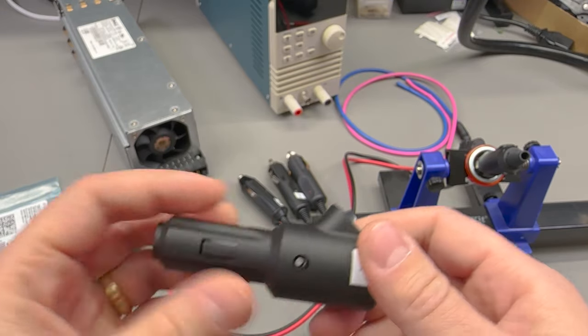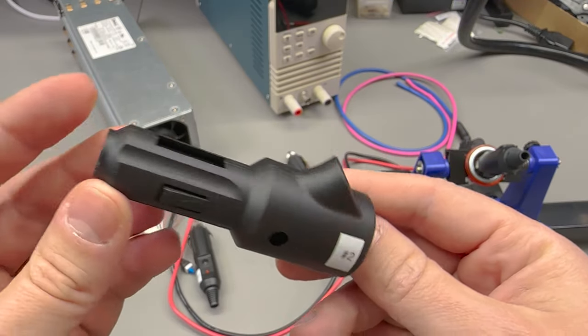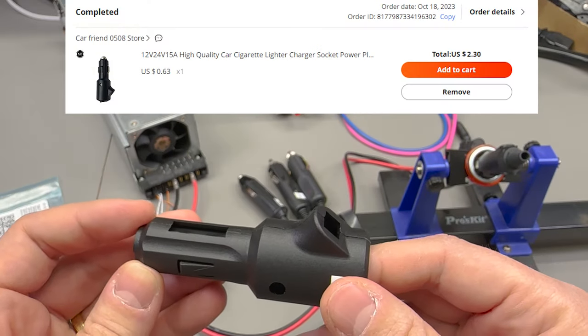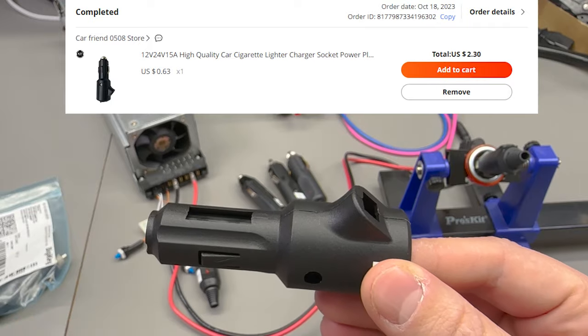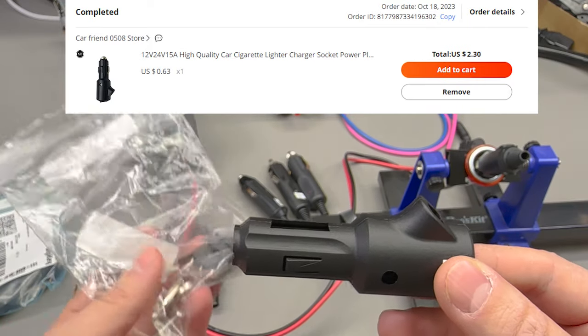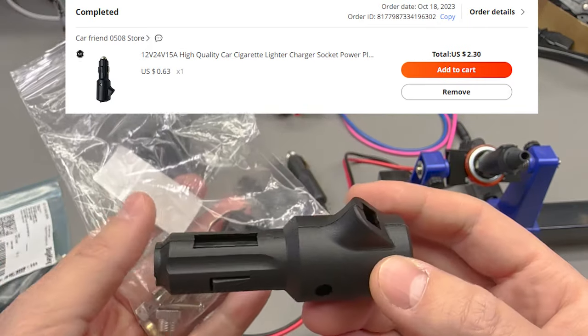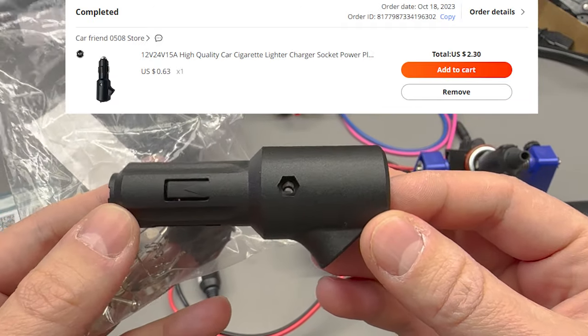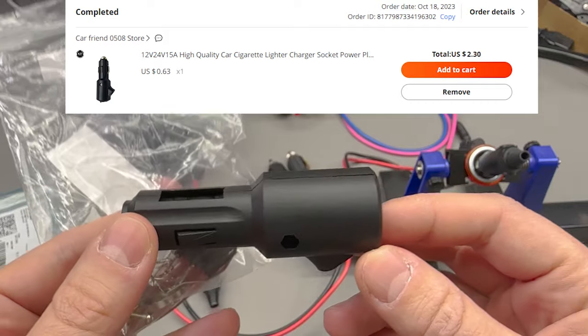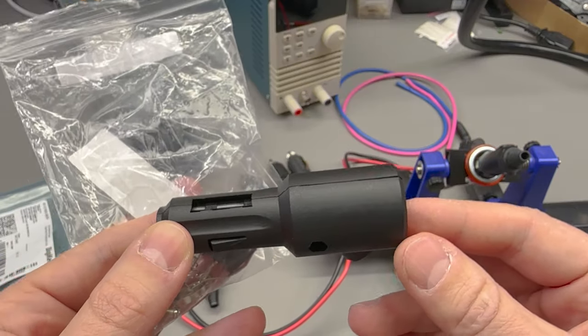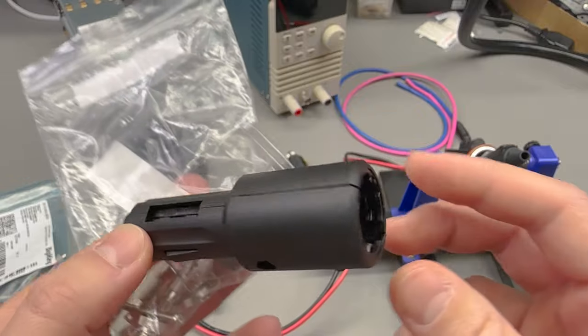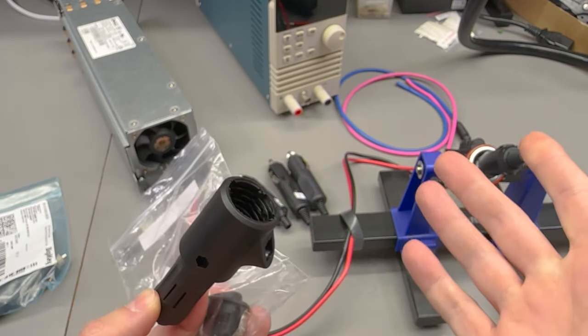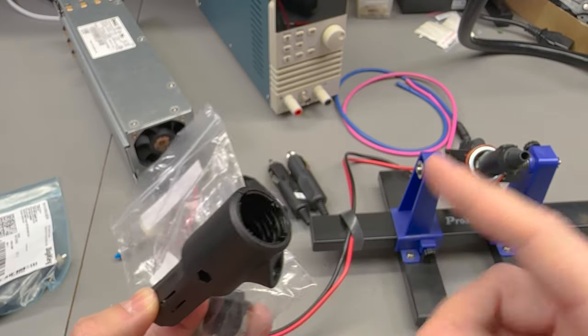Connector number two is one which I got in 2023 for about 63 cents, costing about 2 dollars and 30 including shipping and VAT. It was labeled as 12 24 volt 15 amps high quality car cigarette lighter charger socket power plug outlet. It comes with a rocker switch that you can install. I'm not going to be installing that for this test, I don't want this extra link in my test setup.